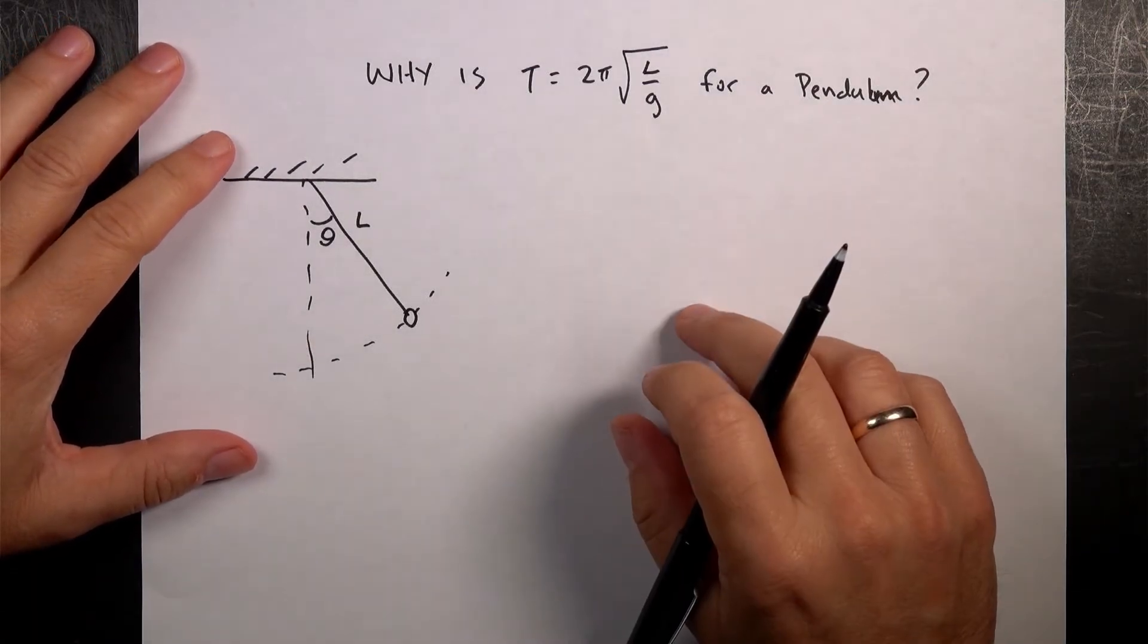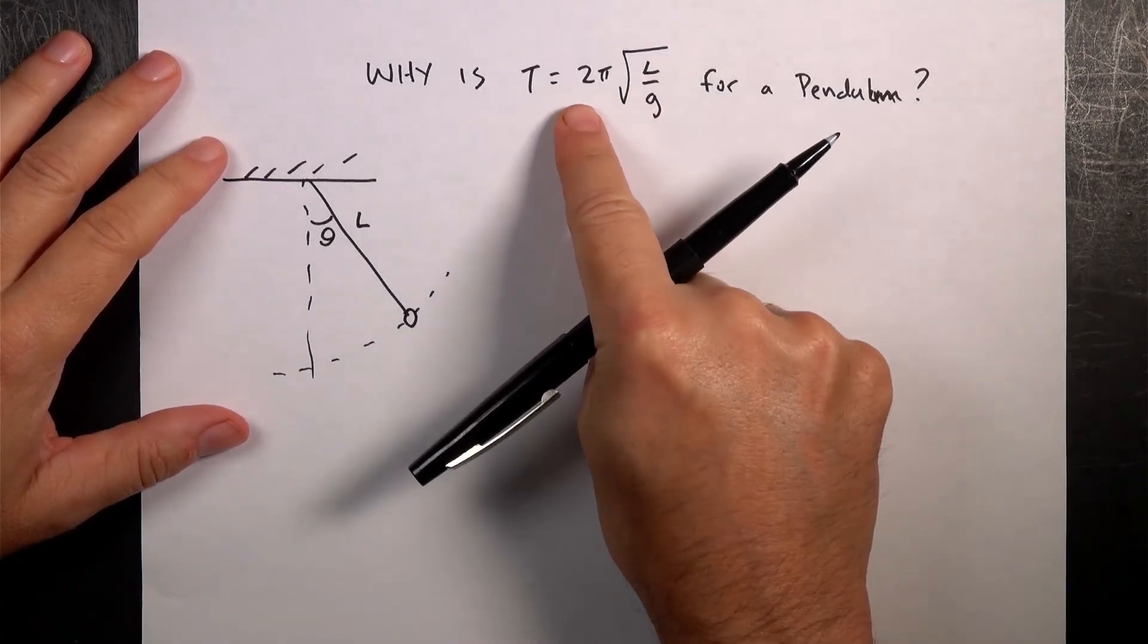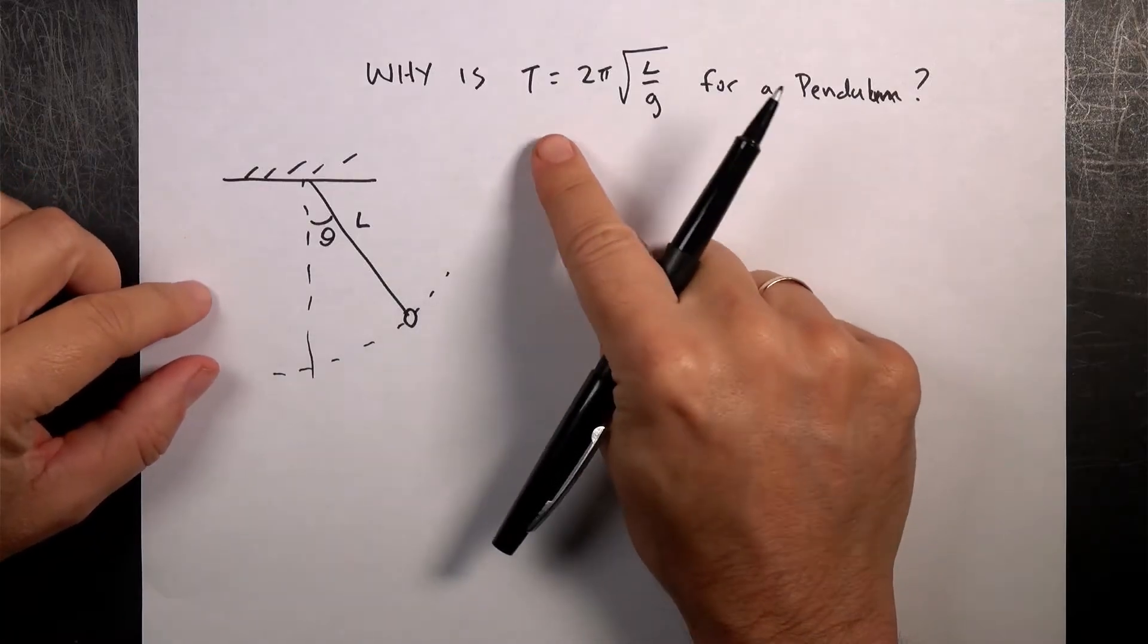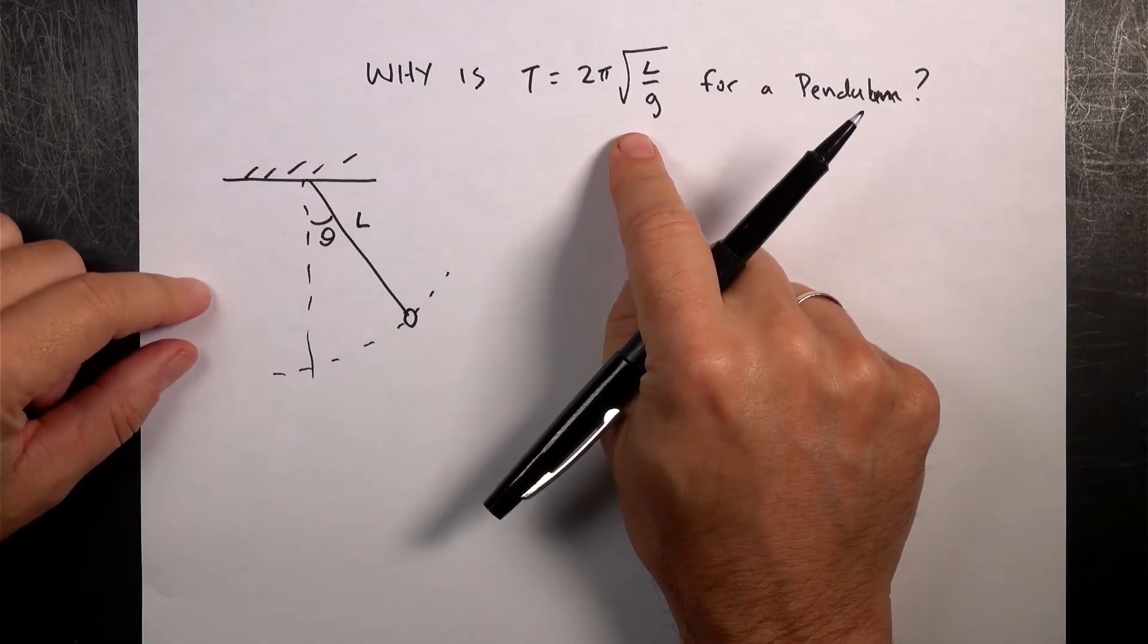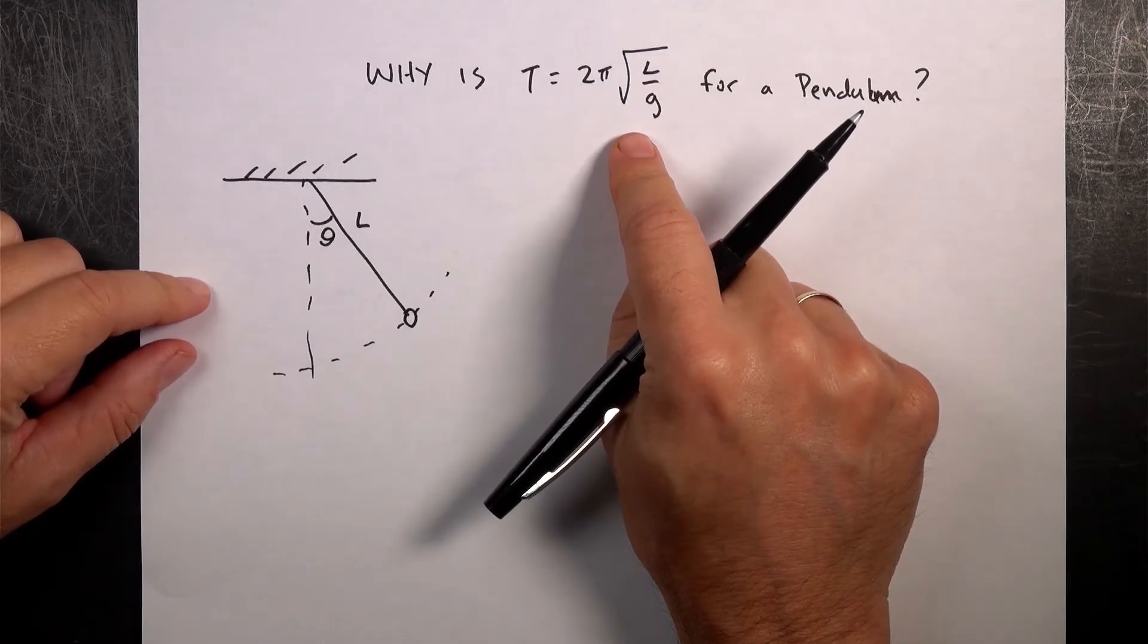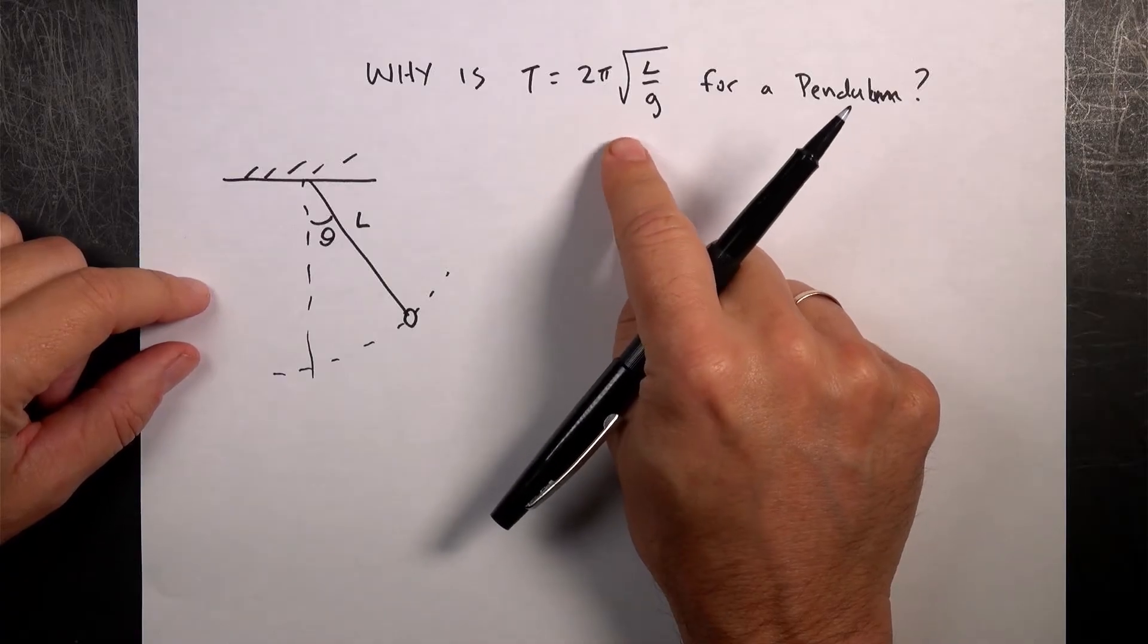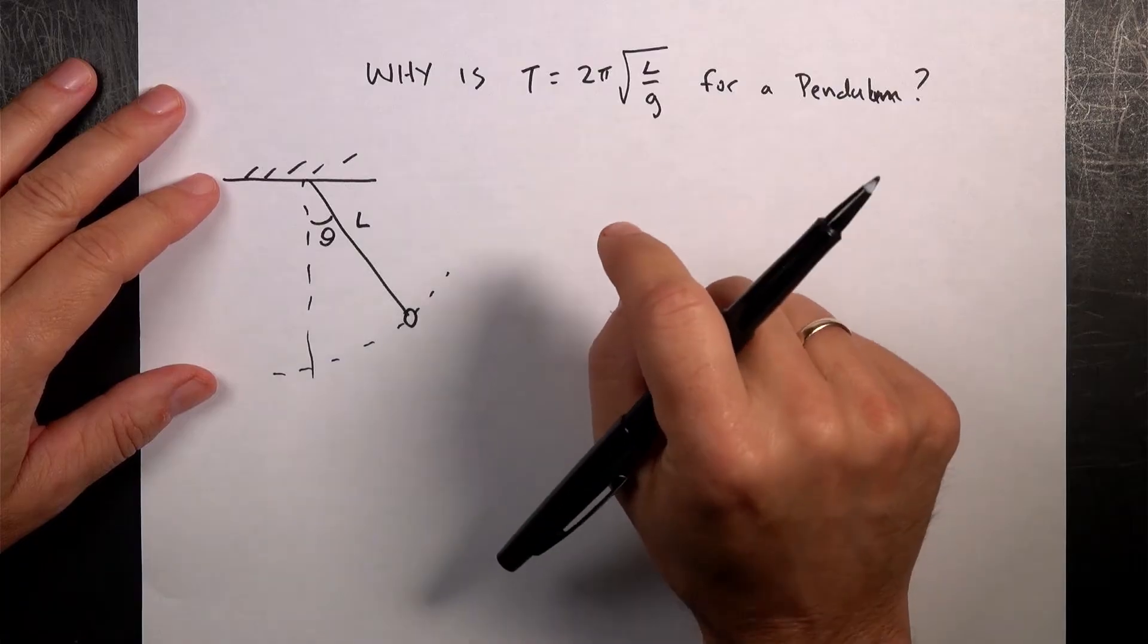I was working through some practice GRE problems, and this came up, using this equation T equals 2π√(L/g) for a pendulum. And the question is, that's the period of oscillation for a pendulum, but why? What if you couldn't remember that? What if you forgot that formula, which is why I didn't like that question in the GRE, because if you have to derive that equation in a very short amount of time, it's really difficult, but you can derive it.